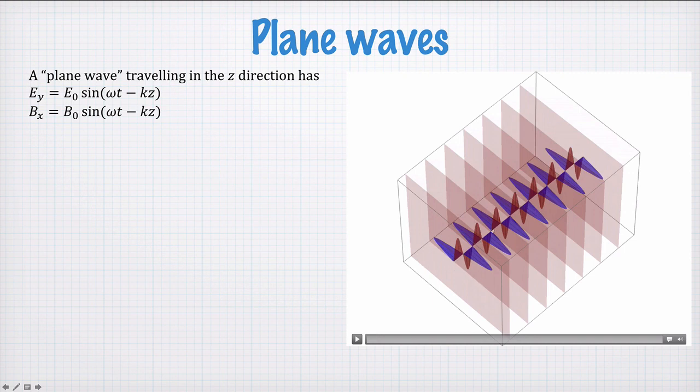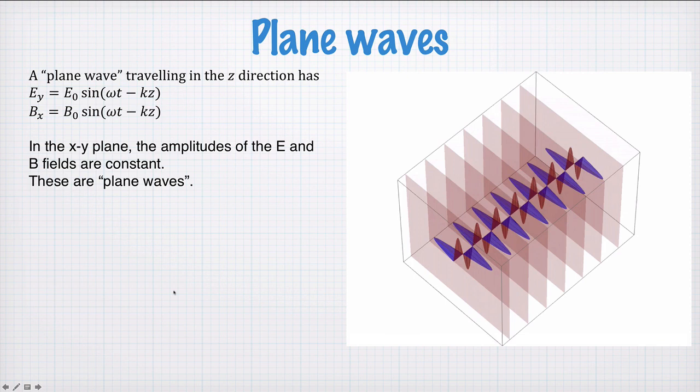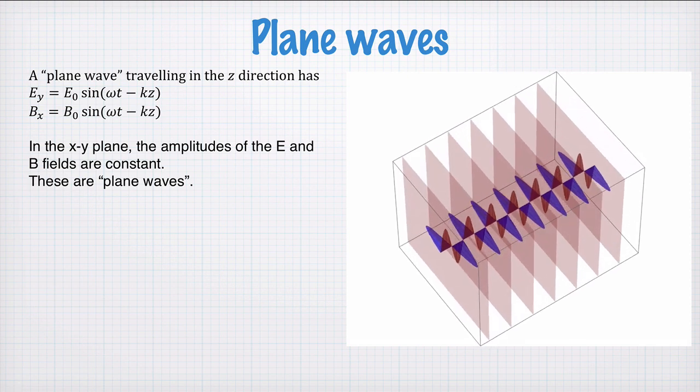So here's the wave traveling in the z direction. The blue is the magnetic field. The red is the electric field. And on each of these planes, which I've plotted every wavelength, we have constant values for the electric field, which would be a vector in the y direction, and the magnetic field, which is a vector in the x direction.